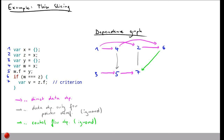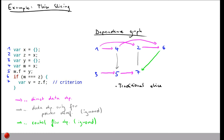Given this dependency graph, we can now compute the slice. To show the advantage of thin slicing, let's first look at what the traditional Mark Weiser static slicing approach would do. Computing the traditional static slice starting from the criterion at statement 7, we look at node 7 and check which other nodes can reach it. Going backwards through all edges, we find that all statements are included in the traditional slice — which is not very useful, especially for larger programs where this often includes far more statements than needed.